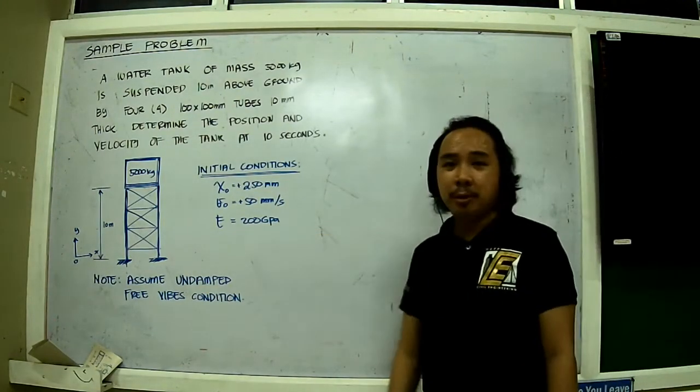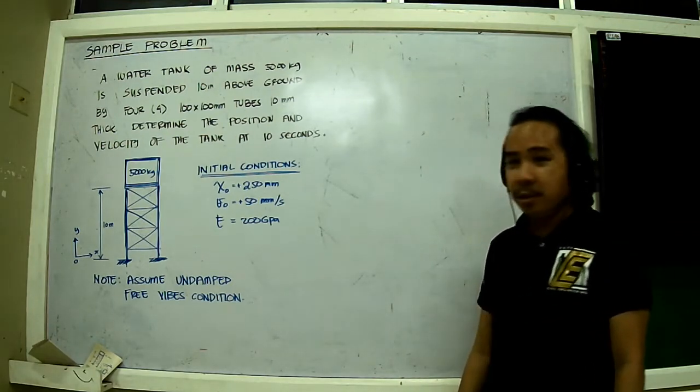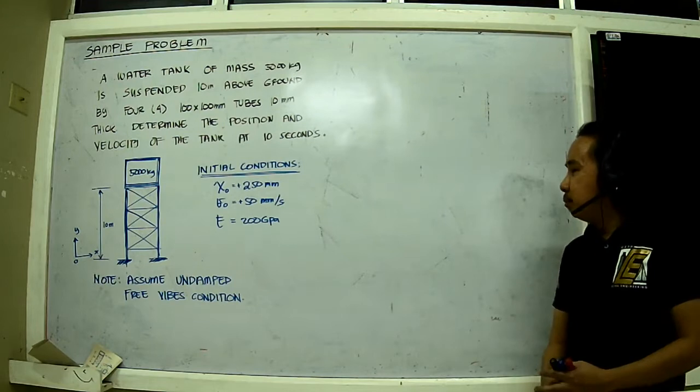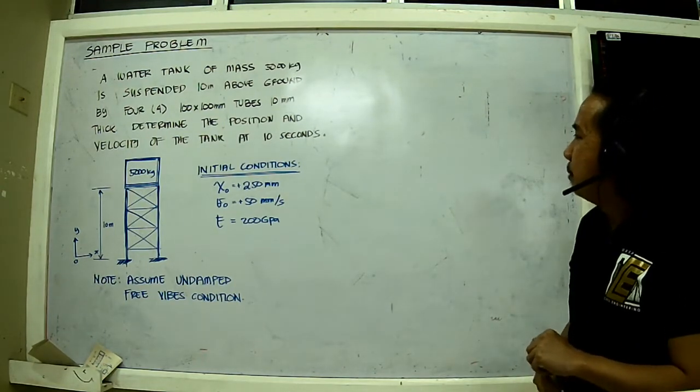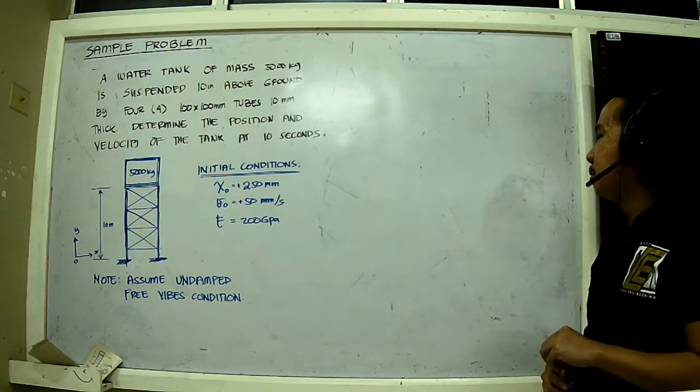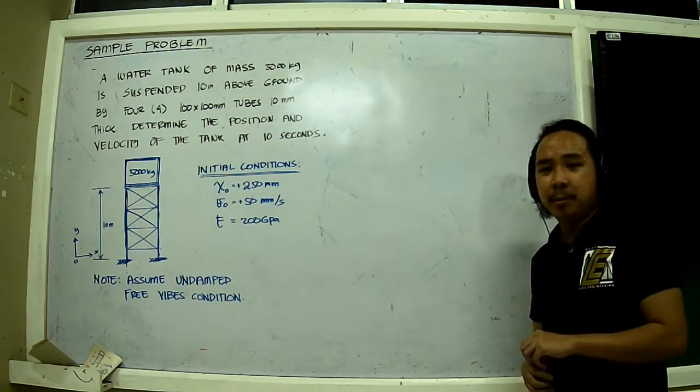Of course we have a modulus of elasticity of 200 GPa. Now I will try to solve this in two methods, but first we'll just go with the basic formulas we derived last time.